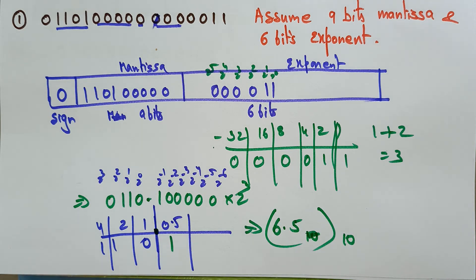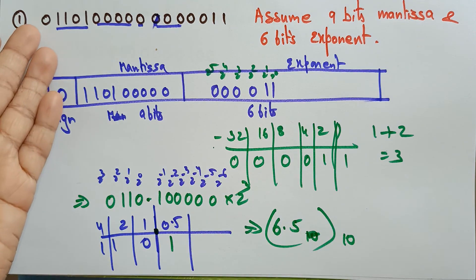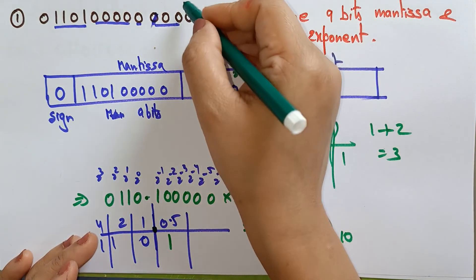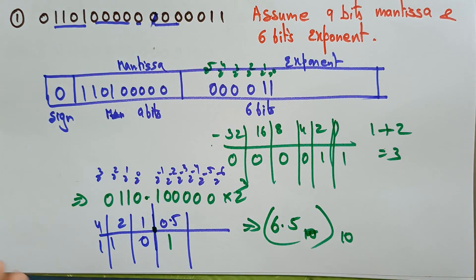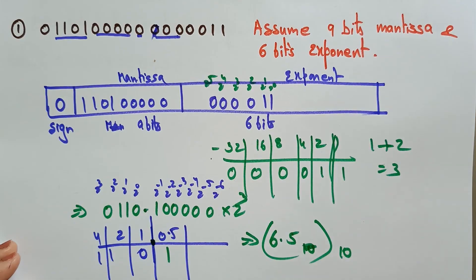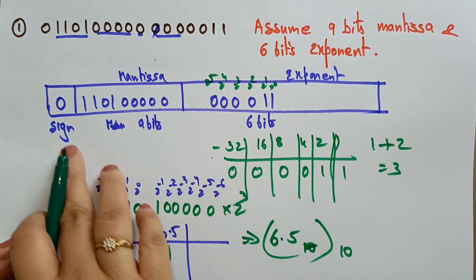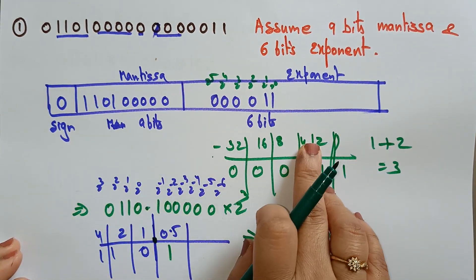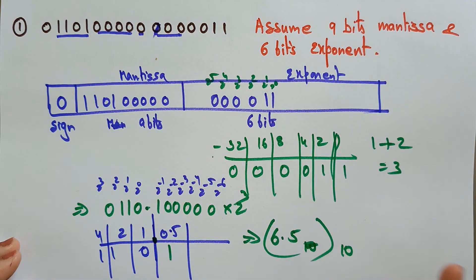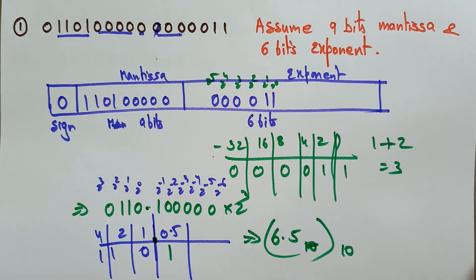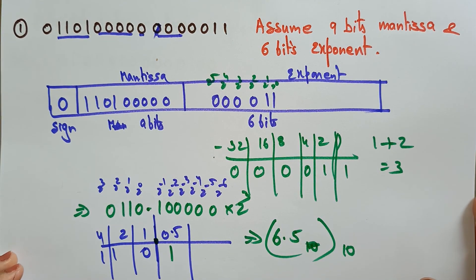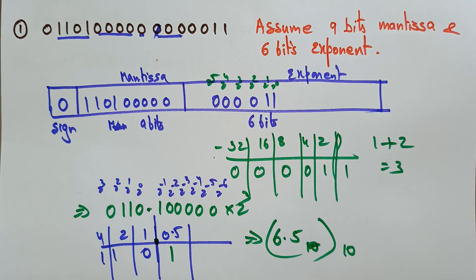If you're still confused, watch the next video for more examples. The reason we use this floating point technique — rather than directly applying 2⁰, 2¹, 2², etc. — is that the number is given as a floating point binary number with mantissa and exponent. So you must use that technique to convert it into a decimal fraction.